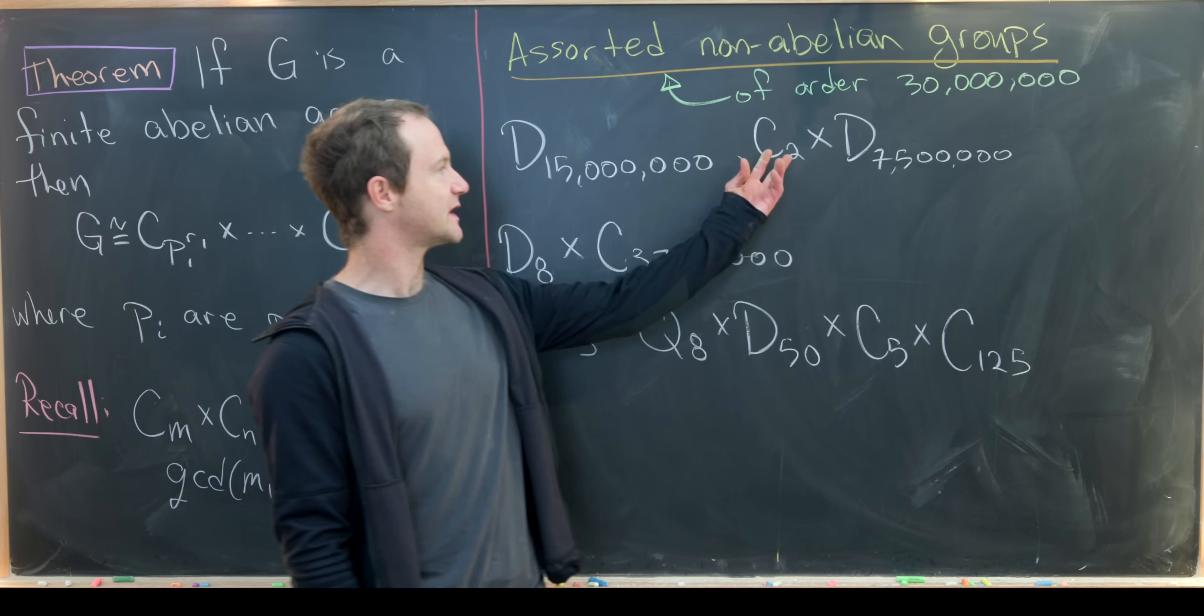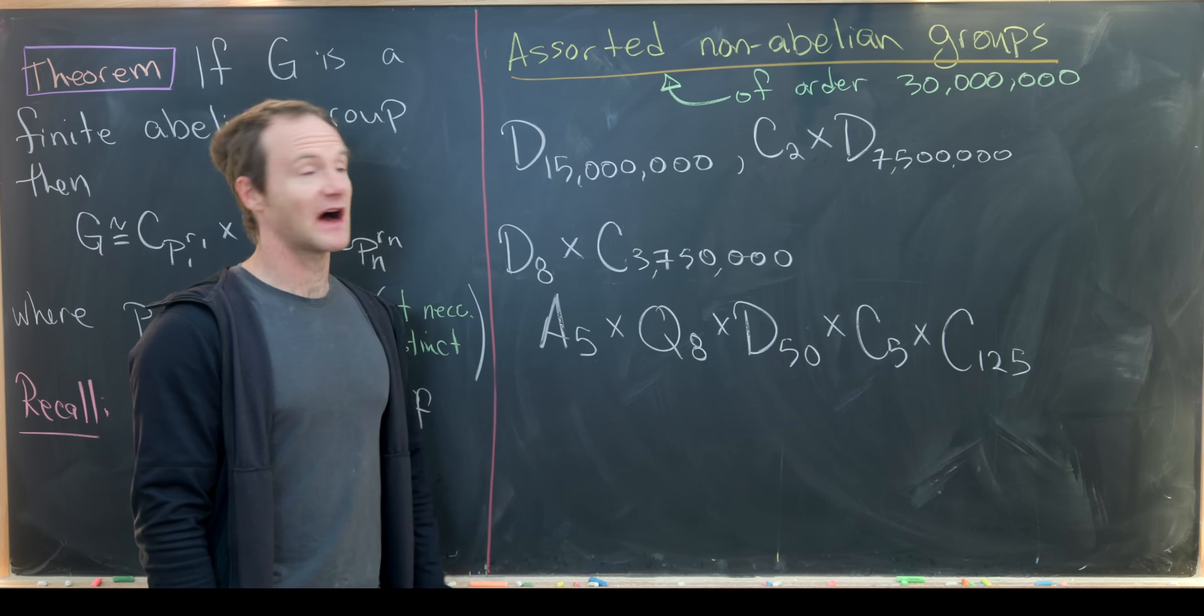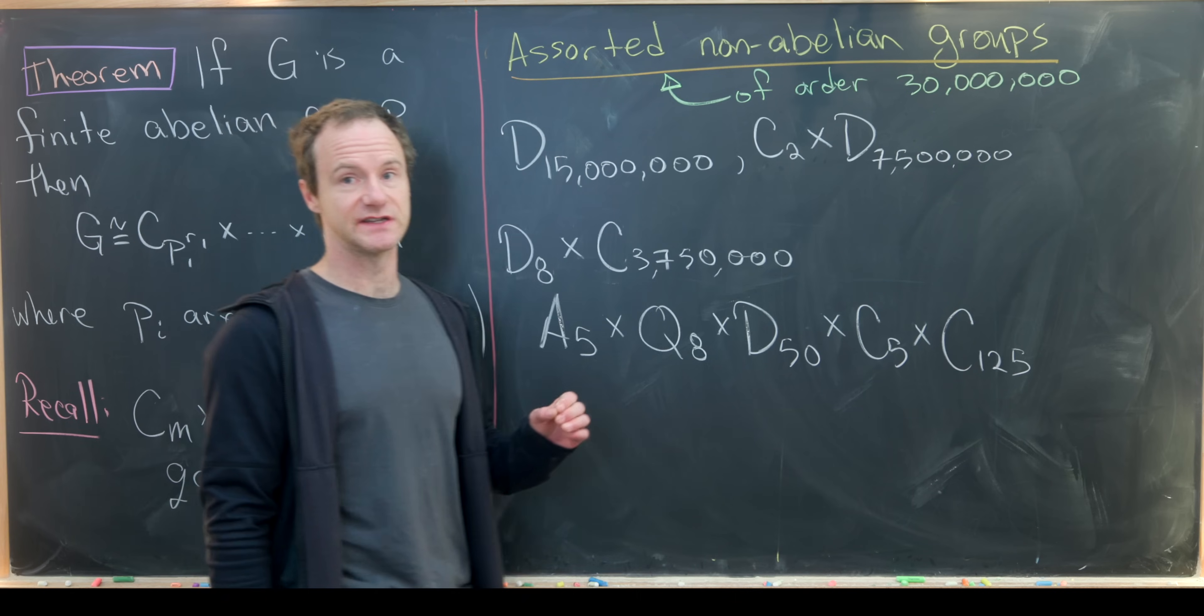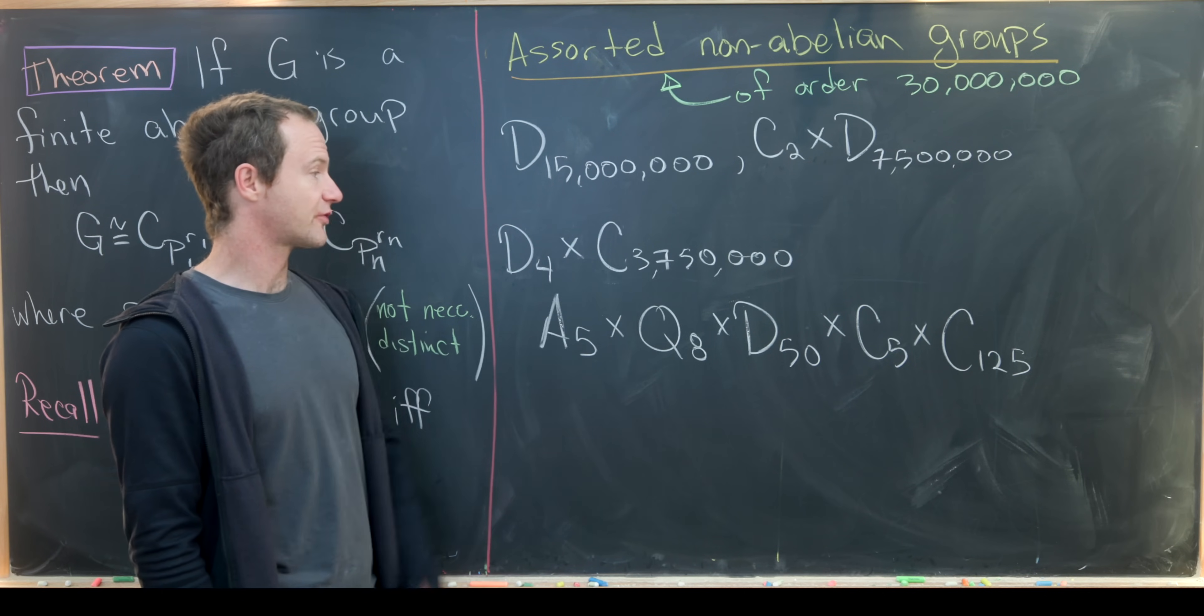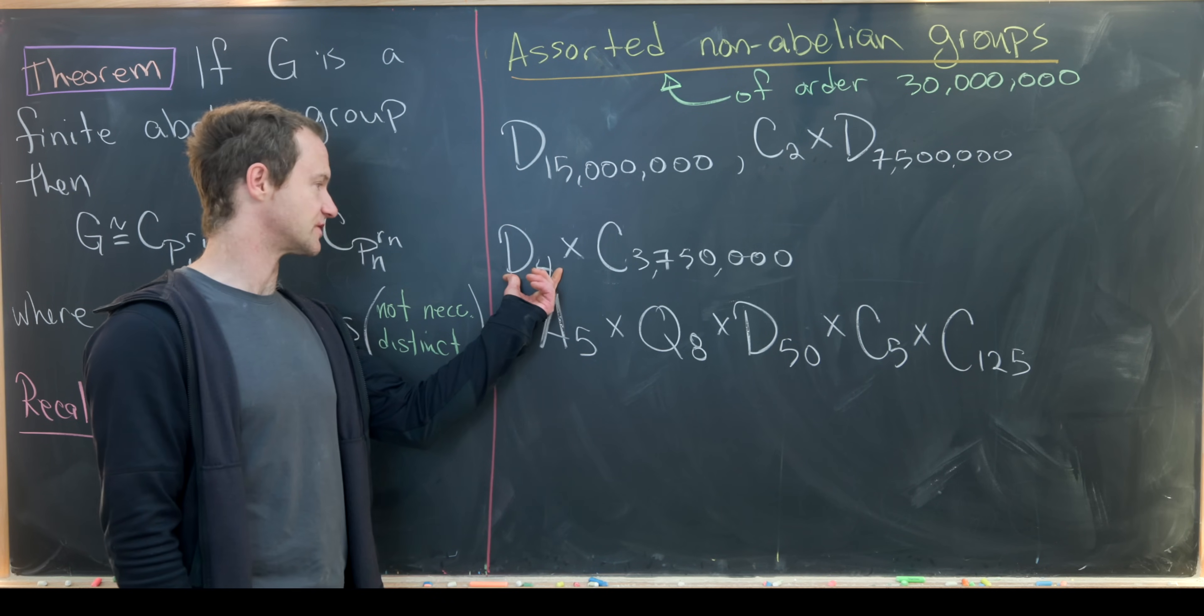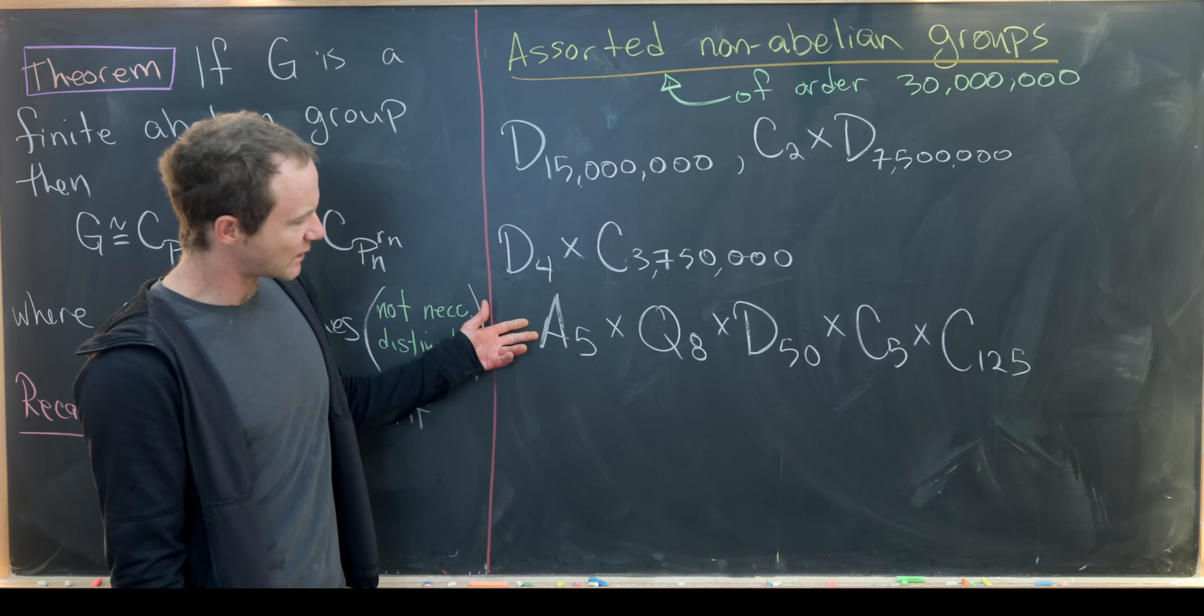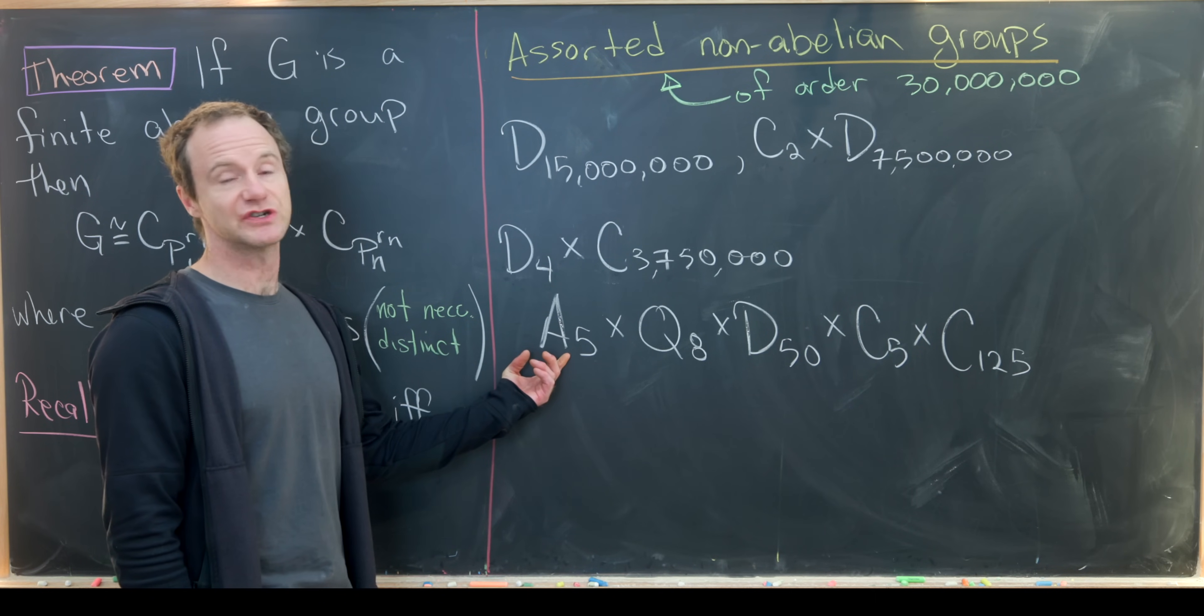Next we have C2 cross the dihedral group D 7,500,000 - the rotational symmetries of a rectangle times all symmetries of a 7.5 million gone. Next we've got D4 cross C 3,750,000. This is all symmetries of a square and all rotational symmetries of a 3,750,000 gone. Here's one I've hacked together which I think is pretty interesting: A5, the symmetries of an icosahedron, cross Q8, the quaternion group with eight elements.